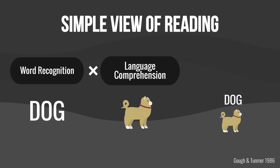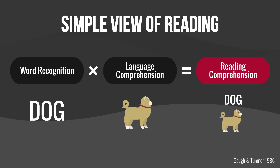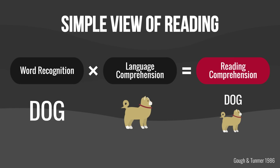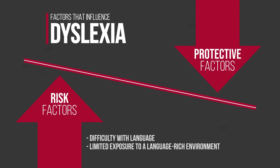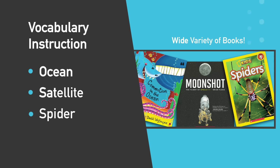We now know that effective reading instruction will include direct teaching of decoding and spelling, including phonetically regular and irregular words. But as we know from the simple view of reading, there is much more to reading than word recognition — students need to know what the words and sentences mean. As difficulty with language is one risk factor for dyslexia, directly teaching vocabulary can aid in the development of skilled reading. However, words in isolation do not always build conceptual understanding.